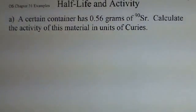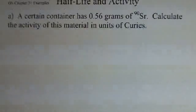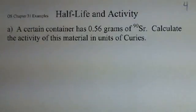We now want to do a calculation involving half-life of a radioactive isotope. Our particular choice here is going to be strontium-90. We have a container that contains 0.56 grams of this at time equals 0. Calculate the activity and use the units of curies, so there will be some conversion factor towards the end here.